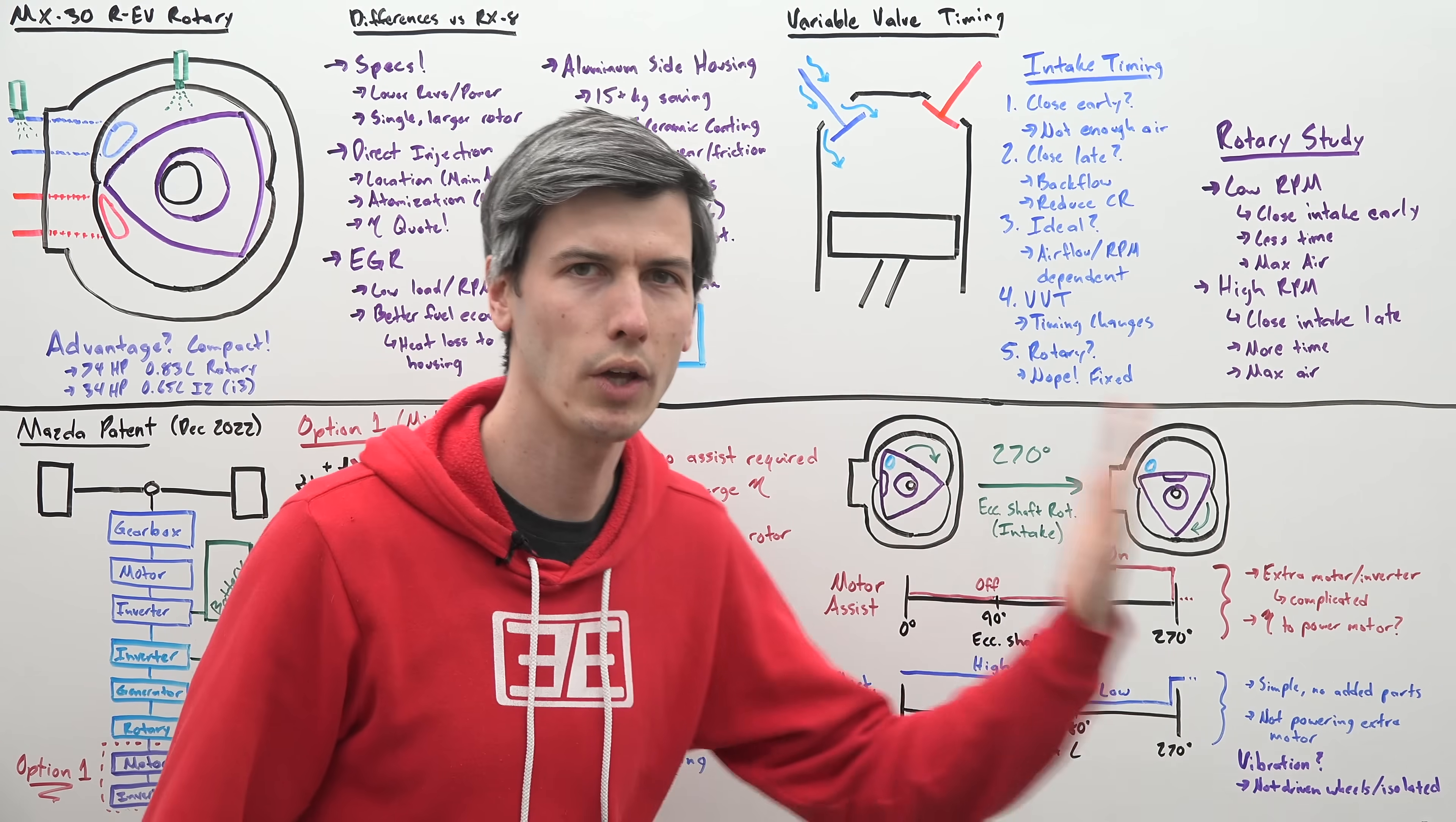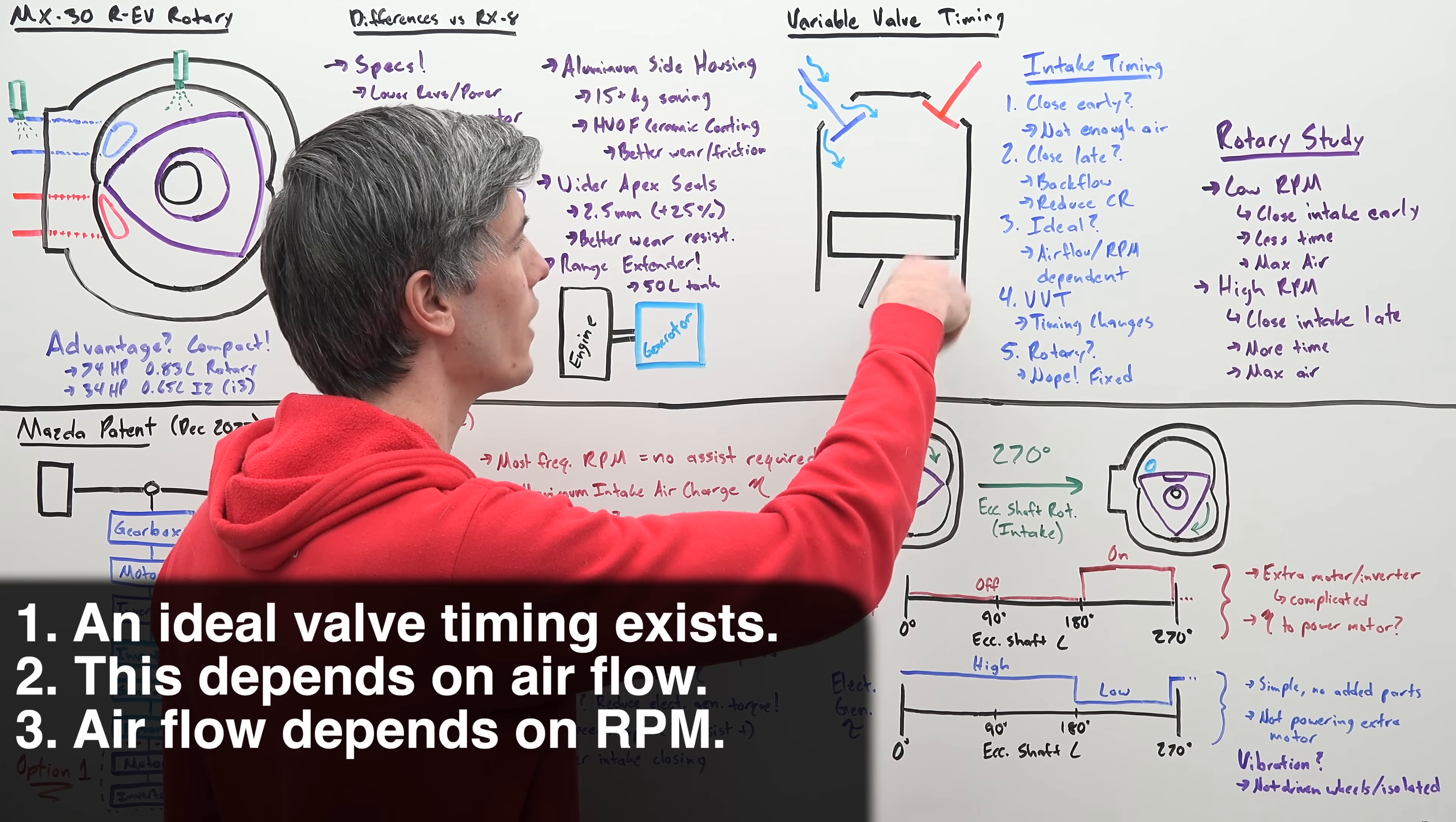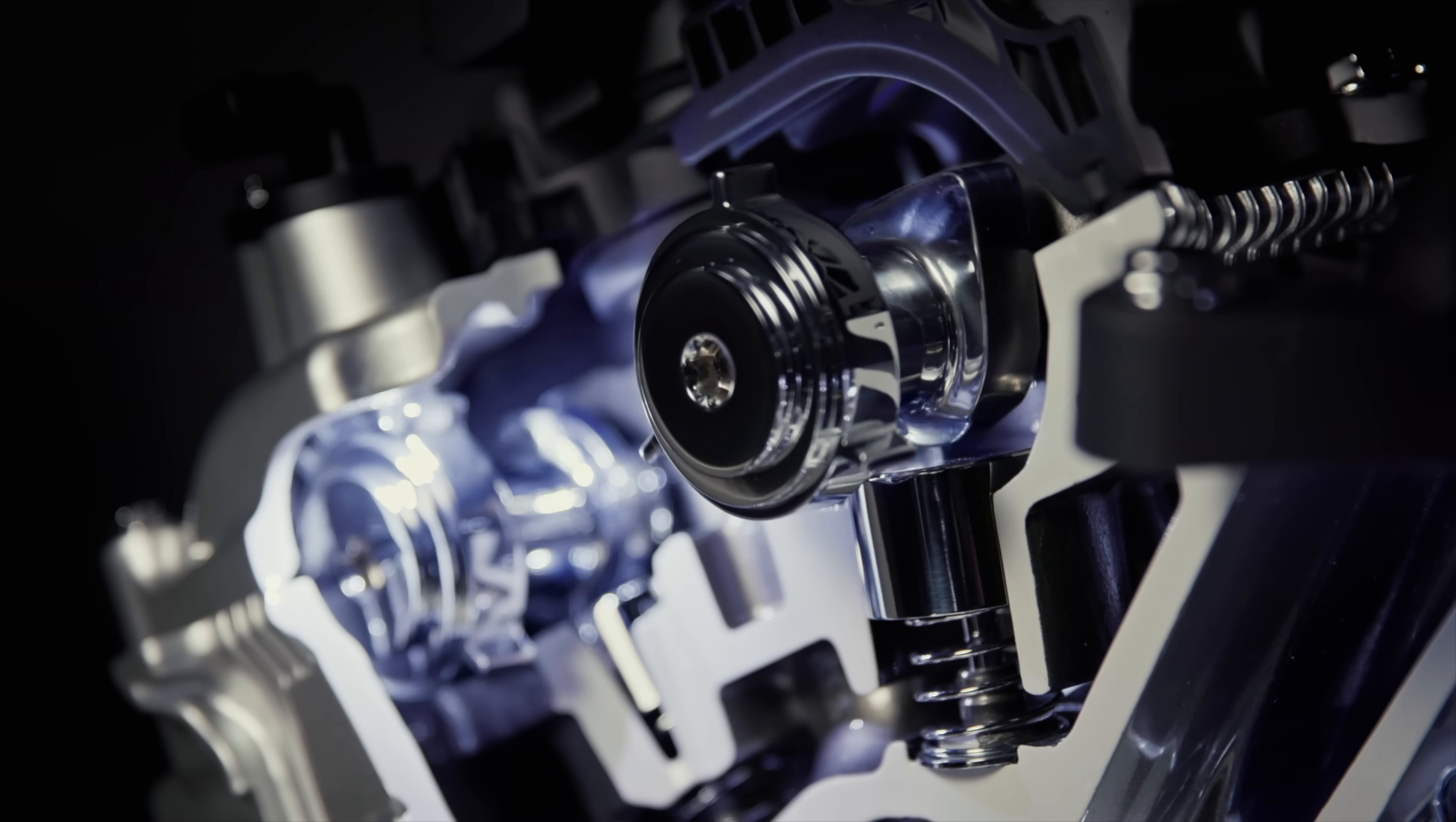So if you open it too short you have problems. If you leave the intake valve open too long you have problems. There's some ideal that falls somewhere in between and it's dependent on the airflow coming in and that airflow coming in changes depending on your RPM. So as this engine is operating at different speeds when you want to open and close this intake valve varies. Okay so that's no problem with internal combustion engines using piston cylinder devices we have variable valve timing and we can change it throughout that RPM range.